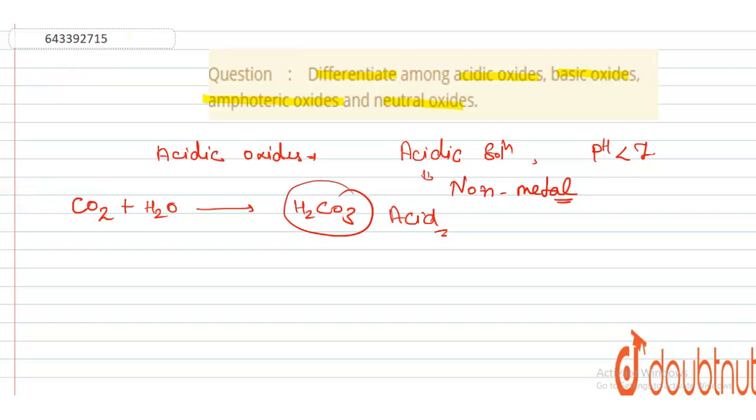Now we talk about basic oxides. Basic oxides are those oxides which, on dissolution in water, give a basic solution. The pH of this type of solution will be greater than 7, and basically all metals form basic oxides.